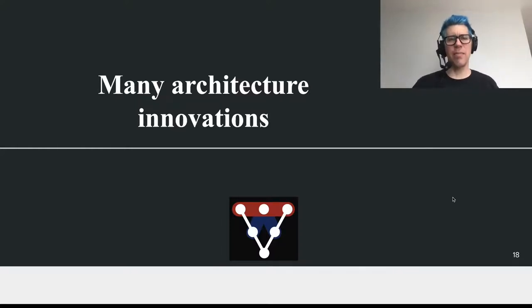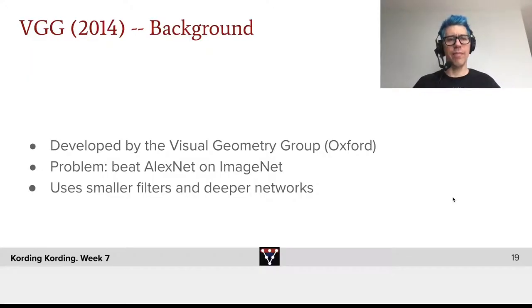After AlexNet came a time of many different architecture innovations. Let's go through a few of them. In 2014, the next outstanding network was VGG. It was developed by the Visual Geometry Group in Oxford, and their goal was to beat AlexNet on ImageNet. It uses smaller filters and deeper networks.